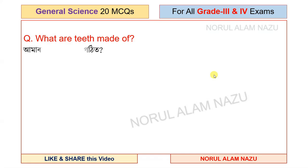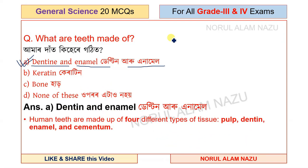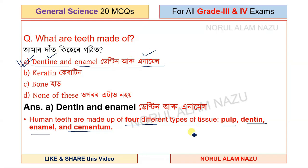First question: What are teeth made of? The options include dentin, carotene, and none of these. The answer is dentin.